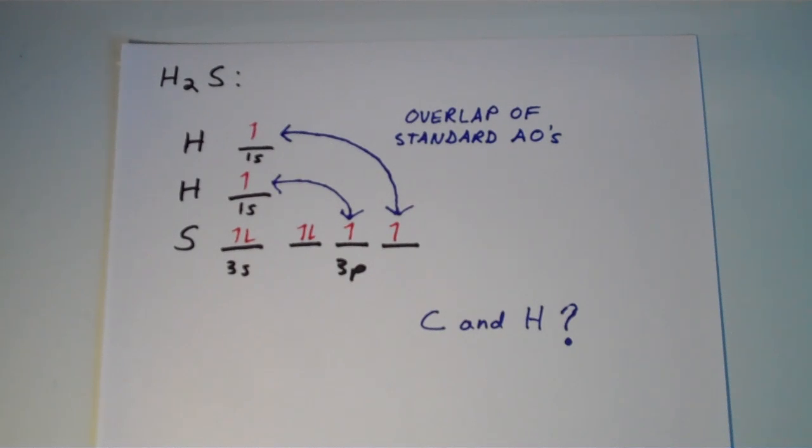Alright, so in my last video I started talking about valence bond theory, which basically treats a chemical bond as an overlap of orbitals. And the better the overlap, the stronger the bond, and the lower energy overall of the electrons that reside in those orbitals.